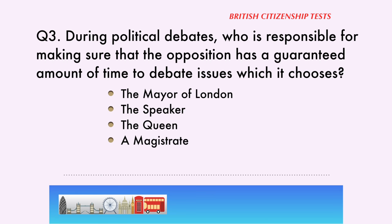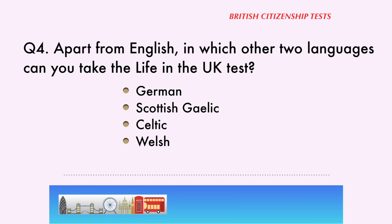Question 3. During political debates, who is responsible for making sure that the opposition has a guaranteed amount of time to debate issues which it chooses? The Mayor of London, the Speaker, the Queen, a Magistrate. The correct answer is: the Speaker.